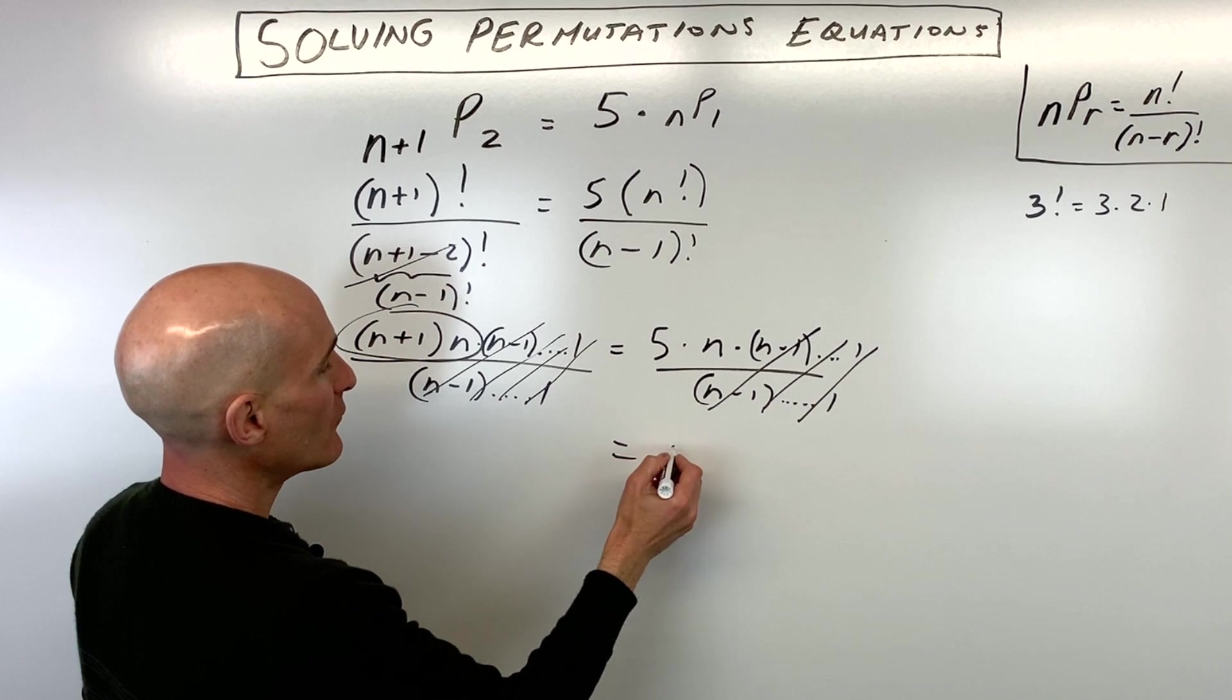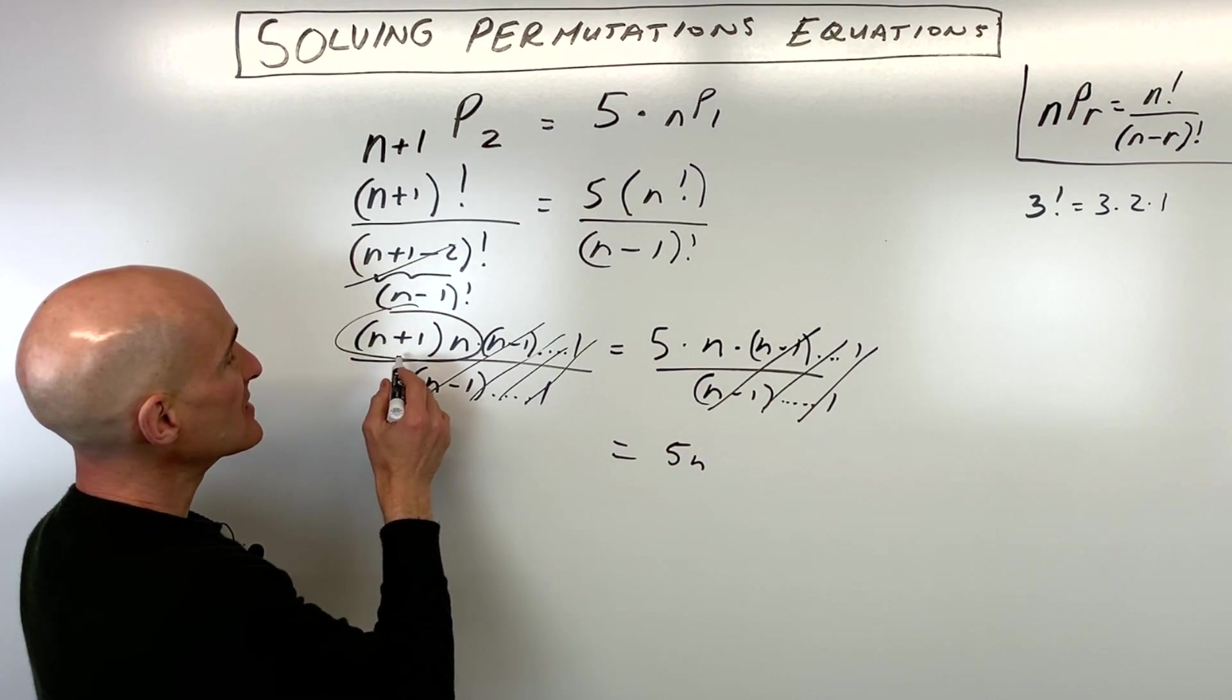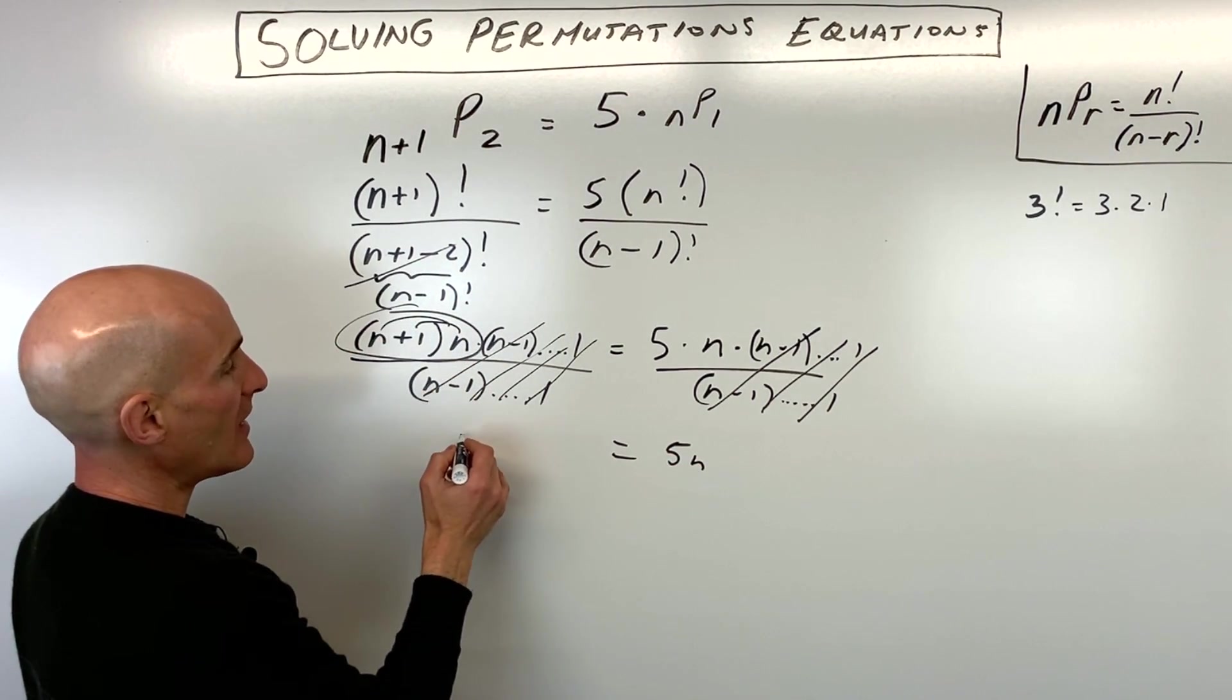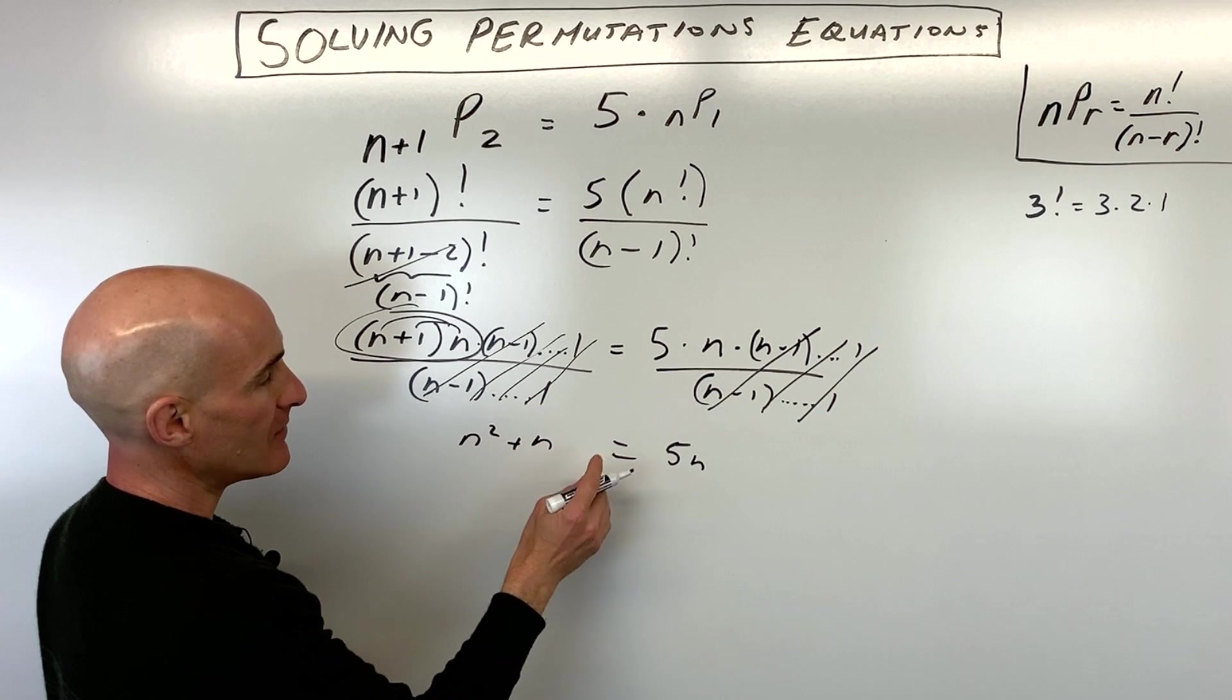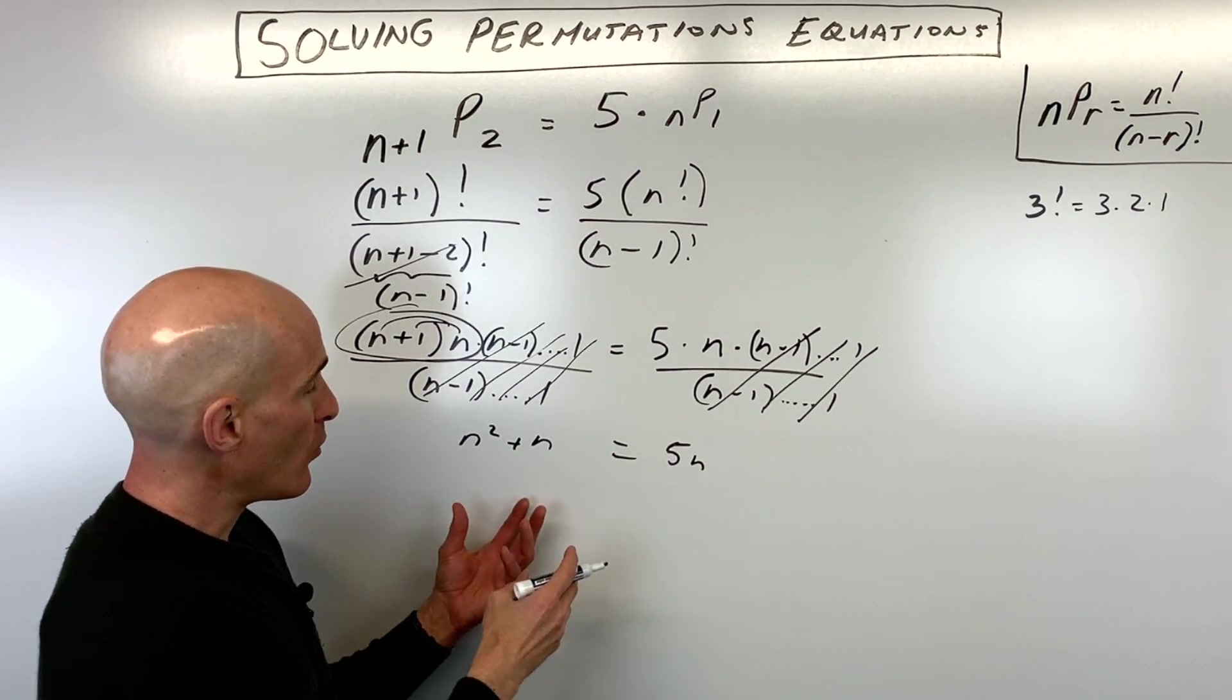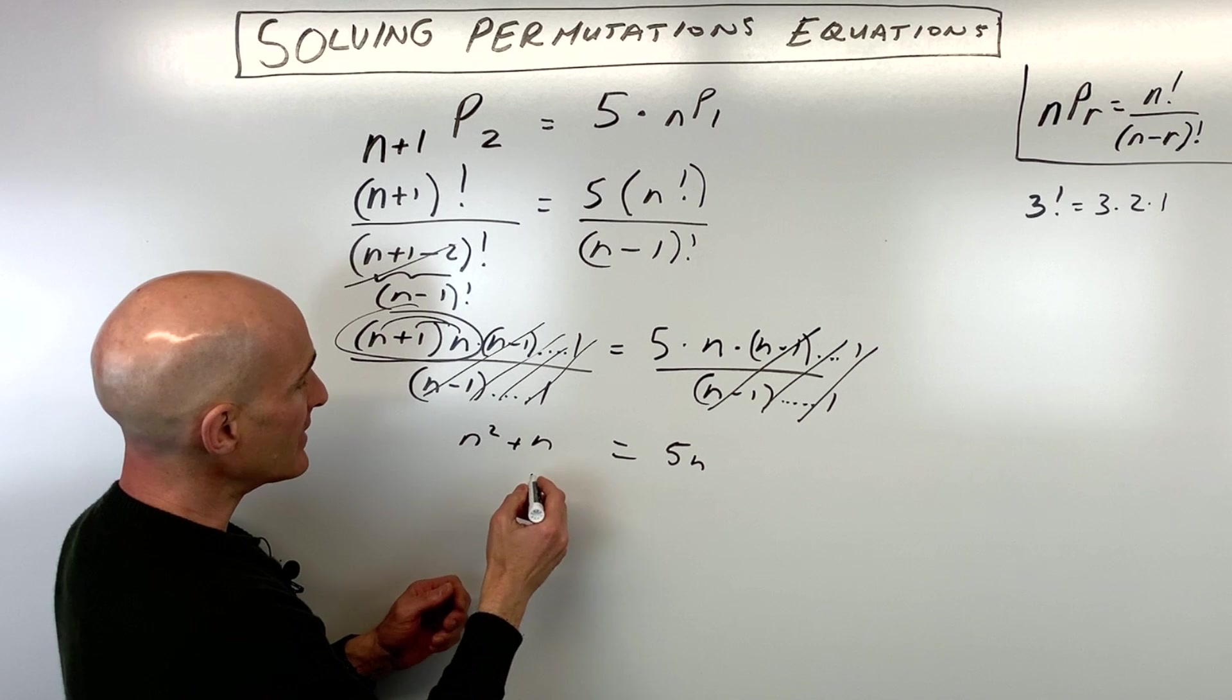So we're just left with 5n. On this side, distributing, we have n squared plus n. We're going to get everything on one side, so I'm going to subtract the 5n.